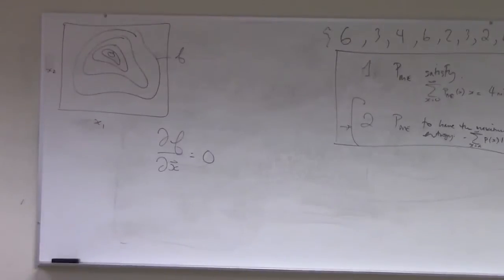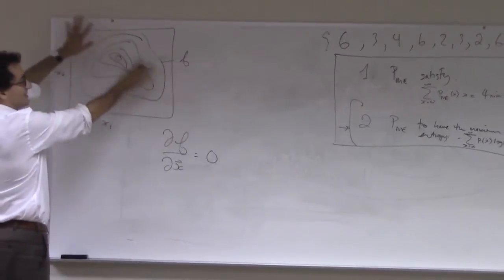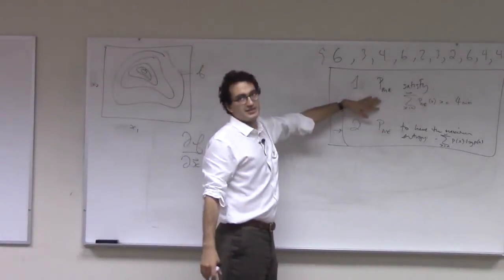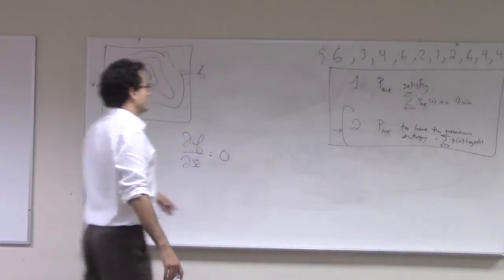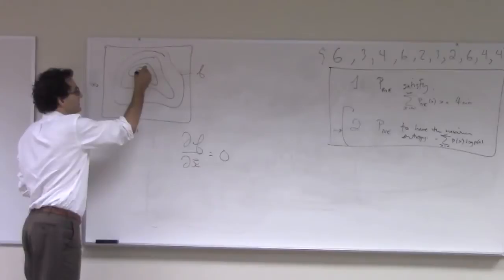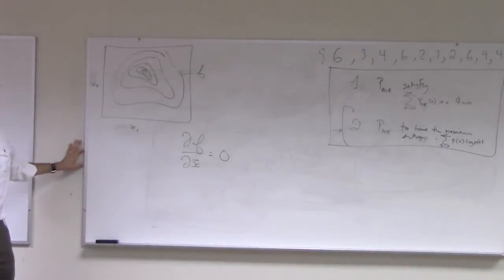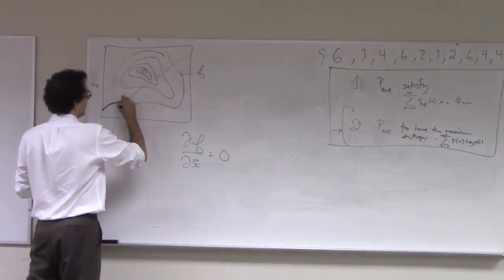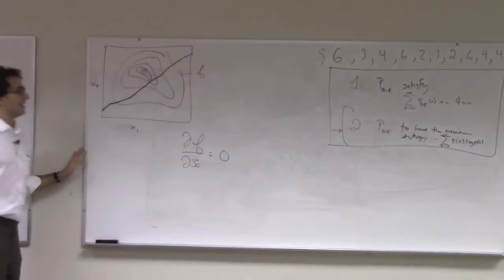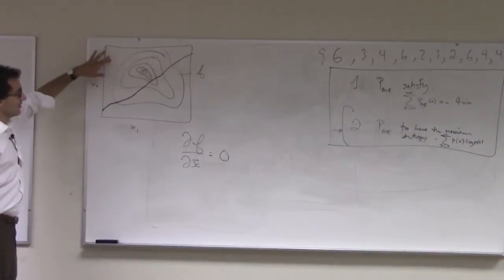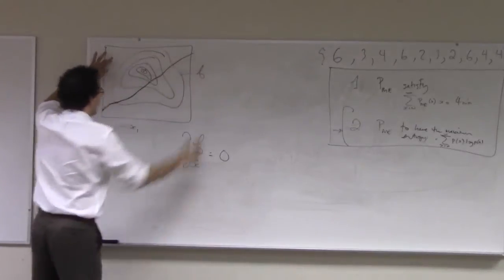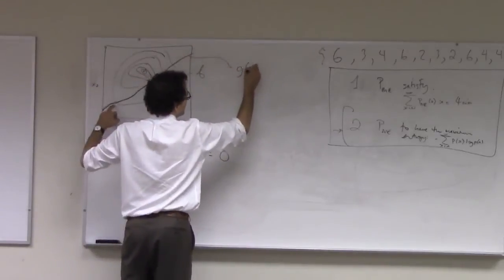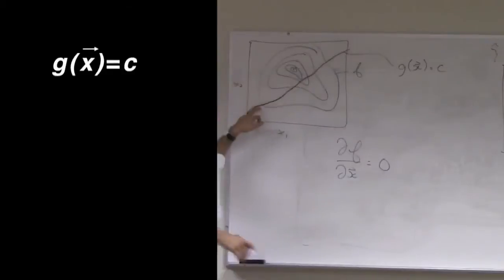So now the problem is that we're not allowed to range over this entire space. We're restricted to some subspace. We're restricted in particular to some constraint here. So how can we find the maximum of the function, not the global maximum, but the maximum that is also satisfying a set of constraints. And what I'll do is draw those constraints as a line in this space. A point here is a valid argument for the function f, but it doesn't satisfy this constraint here. And I'll define this constraint in the following way. I'll say the constraint is that g of x equals c, where c is some number.